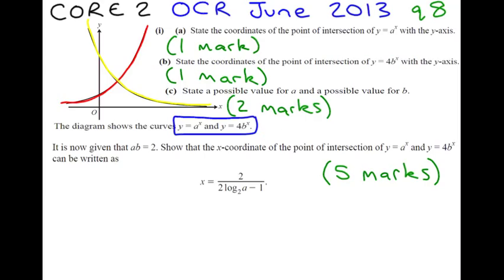So from thinking about x is 0, we can see that the yellow one is y equals 4b to the x, which crosses at 4, and the red one is y equals a to the x, which crosses at 1. So coordinates of y equals a to the x, where it crosses, x is 0, y is 1.